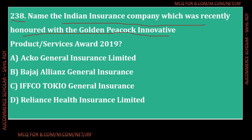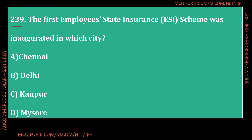Question number 238: Name the Indian insurance company which was recently honored with the Golden Peacock Innovative Product Services Award 2019. Options: Option A - Acko General Insurance Limited, Option B - Bajaj Allianz General Insurance, Option C - Iffco Tokio General Insurance, Option D - Reliance Health Insurance Limited. The correct answer is Option A - Acko General Insurance Limited.